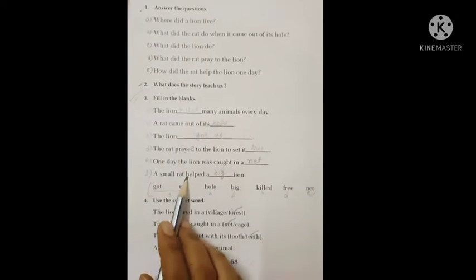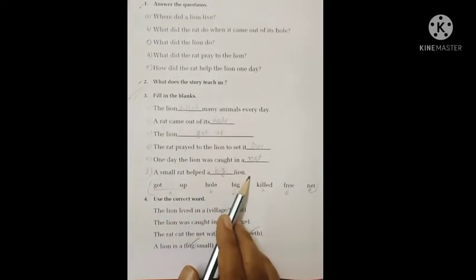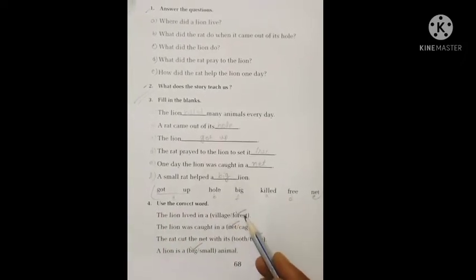A small rat helped a big lion. Question number four: use the correct word. Look, there are options. We have to choose the correct word here.